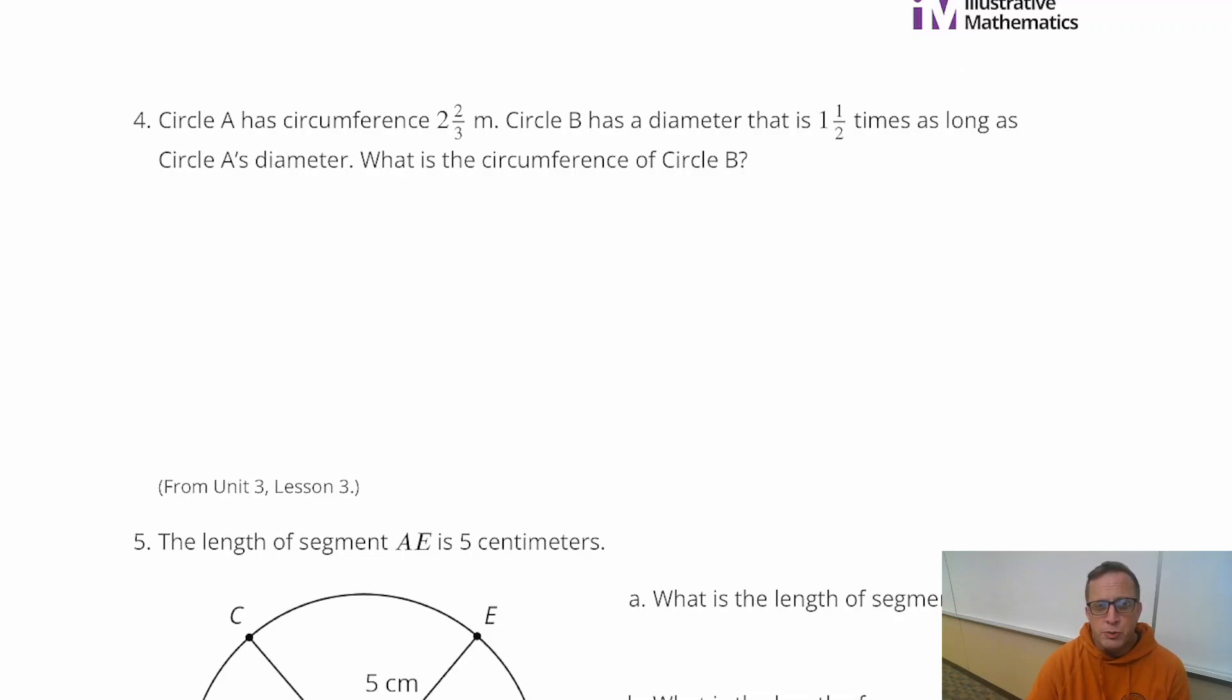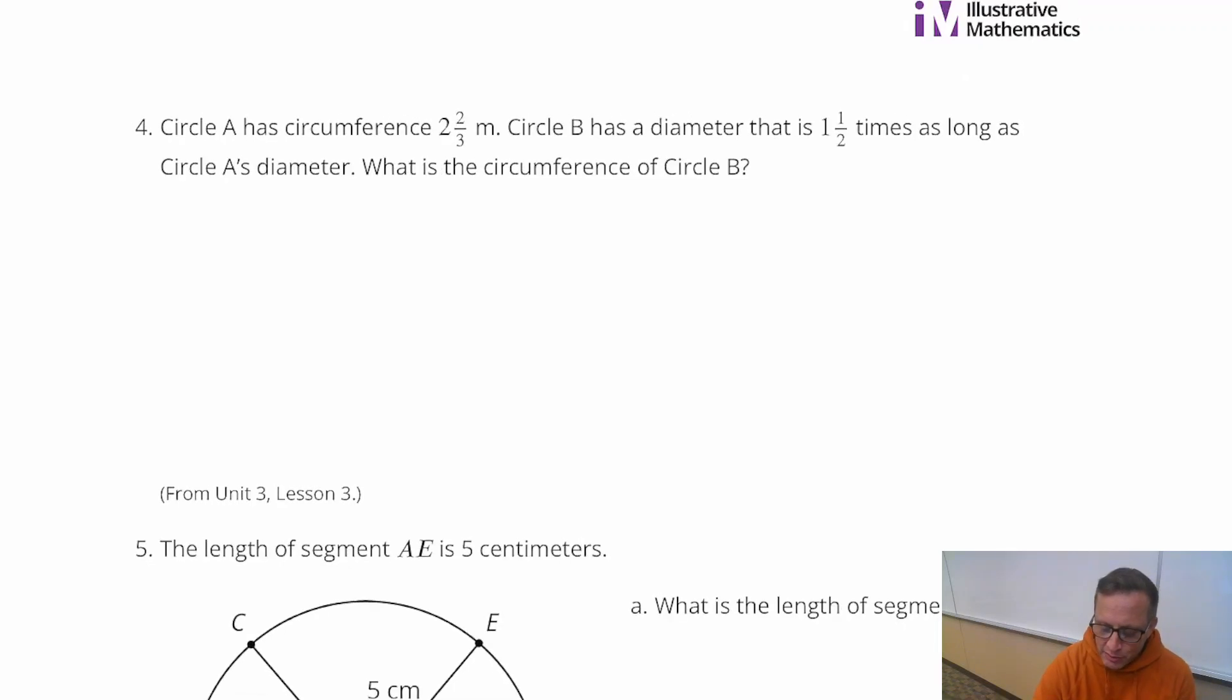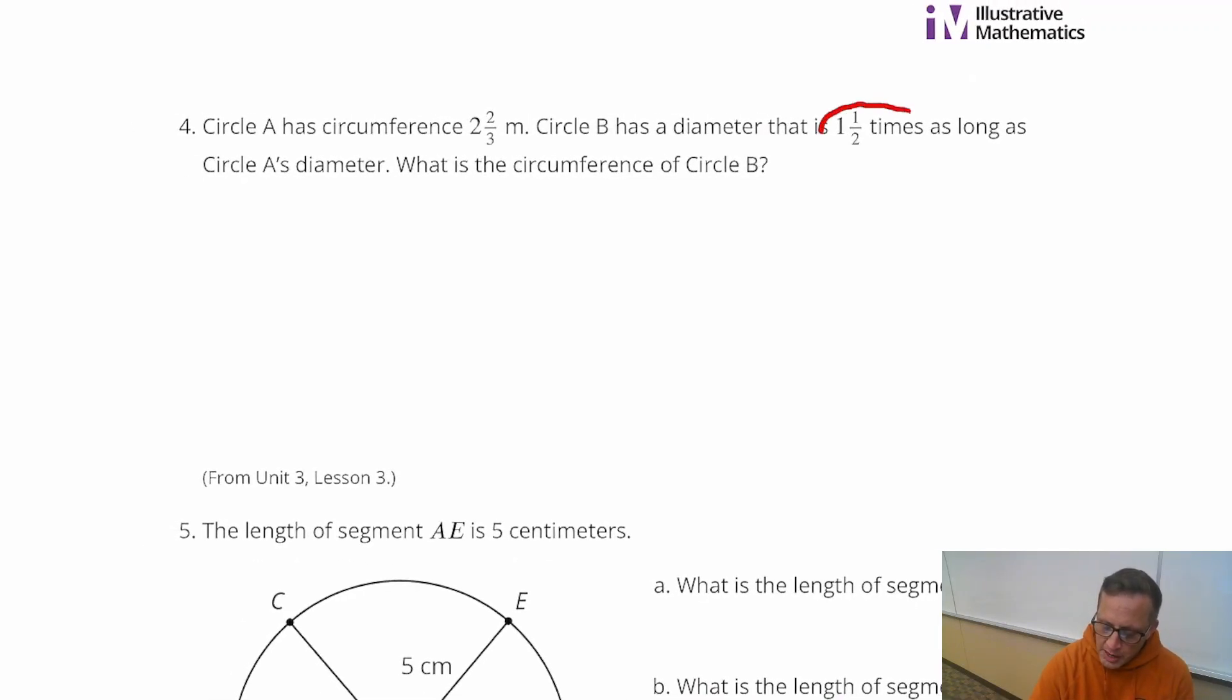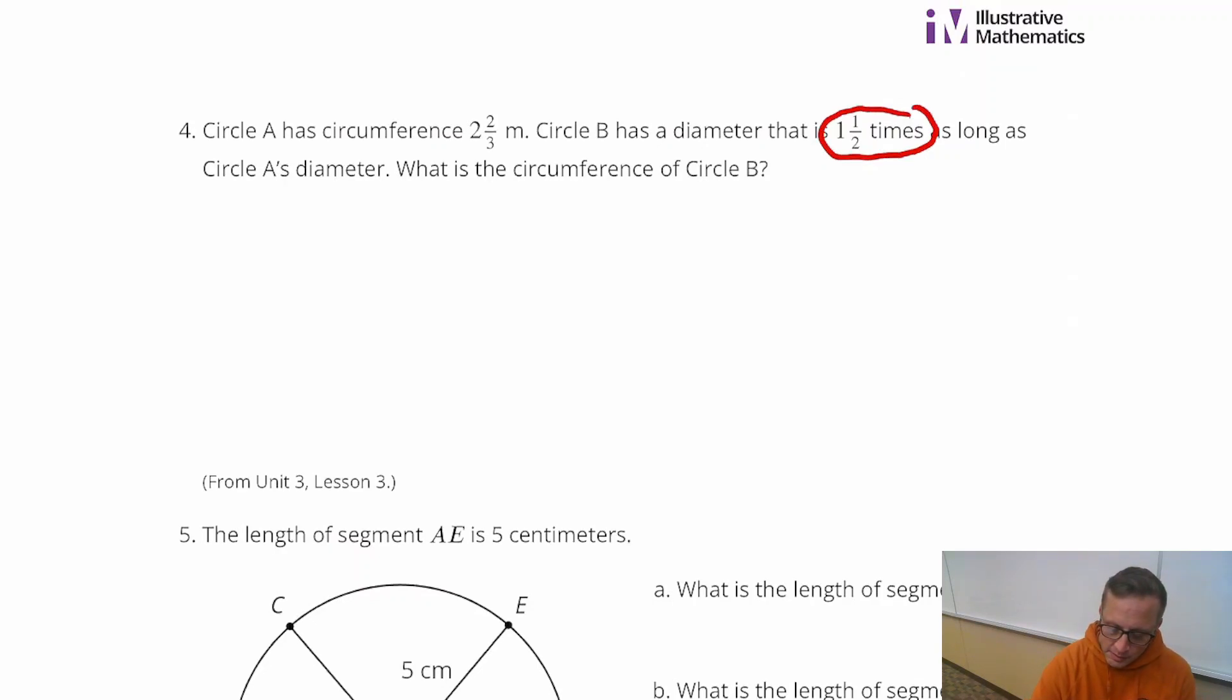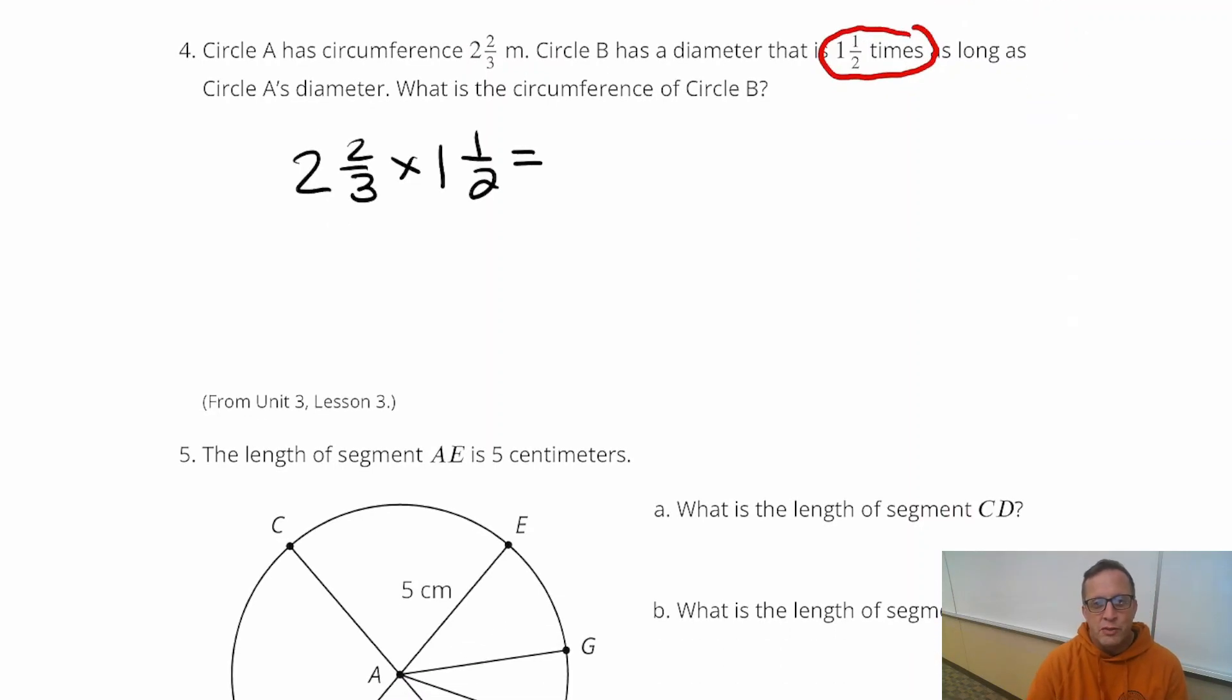So circumference, if you remember from previous lessons, is proportional to diameter. It's a proportional relationship. Not like area is. Area is not proportional, but circumference is. Meaning this is basically telling us the scale factor. It's right here, it says it's 1 and 1 half times as long. The diameter is, at least, 1 and 1 half times. So that is also going to be true about the circumference. So if we just take the circumference of circle A, which is 2 and 2 thirds, and multiply that by 1 and 1 half, you're going to get the circumference of circle B.